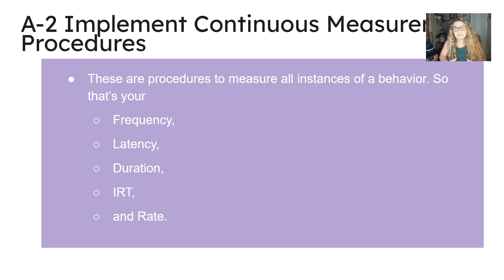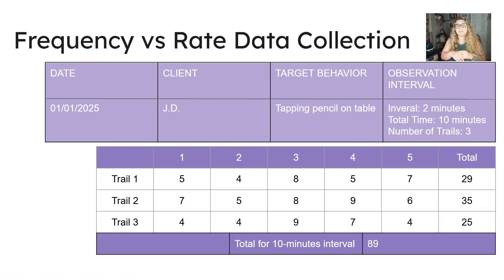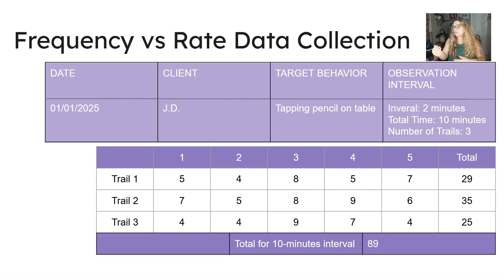A-2: Implement continuous measurement procedures — these are procedures to measure all instances of behavior. You have frequency, which is your count; latency, which is the time between the SD and a response; duration, which is how long something happened; IRT, which is the time between two different responses; and rate, which is frequency divided by time. On the data sheet you'll see the date, client's initials, the behavior being targeted, the observation interval, and total time.